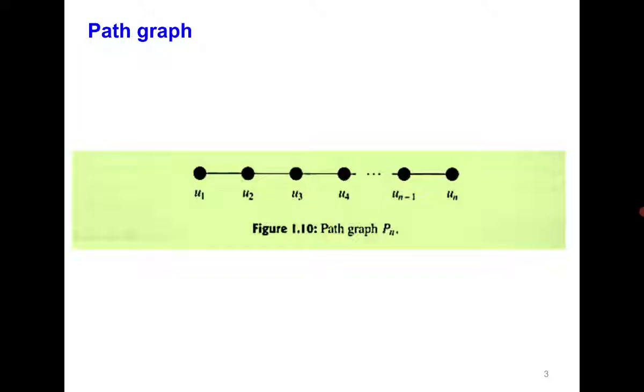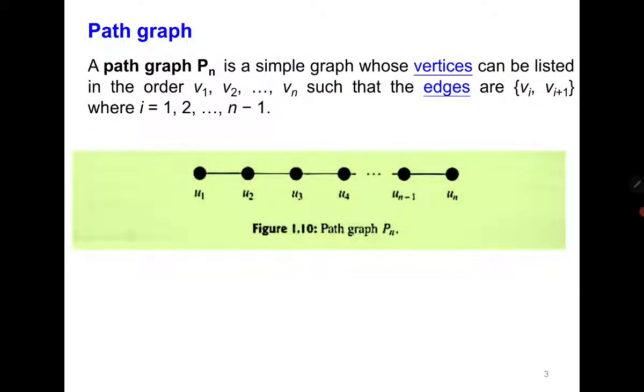Then the path graph. It looks like a path where u1 is adjacent to u2, u2 is adjacent to u3 and so on. It is a simple graph where vertices are v1, v2, vn and edges are vi, vi plus 1. Simple graphs are extremely important. Throughout the course we will be focused mainly on simple graphs.